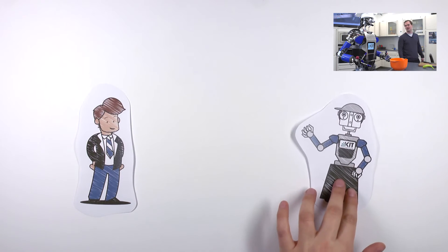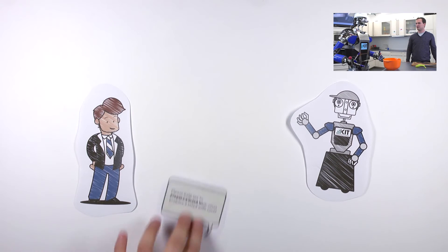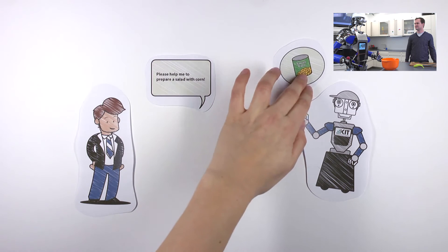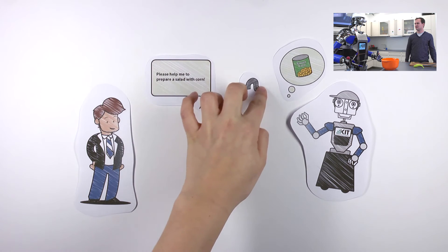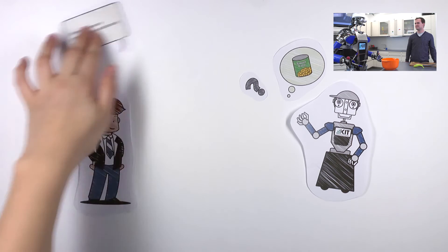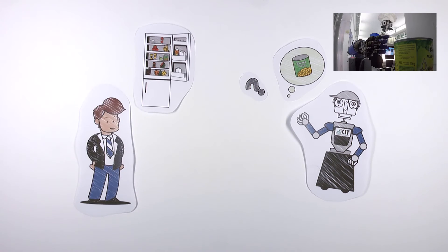Then Mirko asks Ama to go for a can of corn for the salad. Ama does not know where the corn is and asks Mirko. Mirko tells Ama that the corn is in the fridge, and Ama brings the corn.